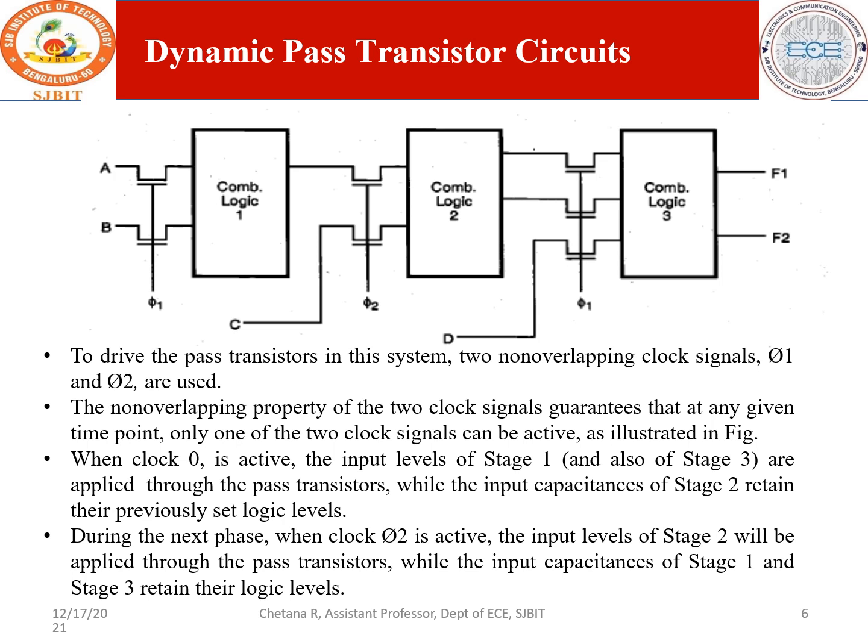To drive the pass transistors in this system, two non-overlapping clock pulses phi-1 and phi-2 are used. The non-overlapping property guarantees that at any given point, only one of the two clock signals will be high. In the next slide we see the non-overlapping clock signals where at any moment of time only one is high.